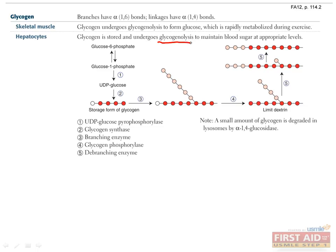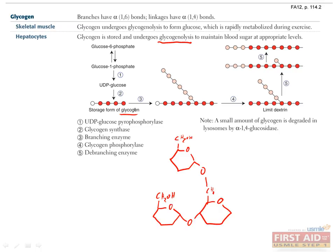Now let's go over what actually happens in both glycogen synthesis and glycogenolysis. Glycogen is essentially a polymer of glucose, in which branches are connected by 1-6 bonds and linkages have 1-4 bonds. Most glucose molecules are connected between the 1 and 4 position, whereas the branches are connected between the 1 and 6 position. Connecting via 1-4 linkages produces a straight line, whereas 1-6 linkages come off at an angle.